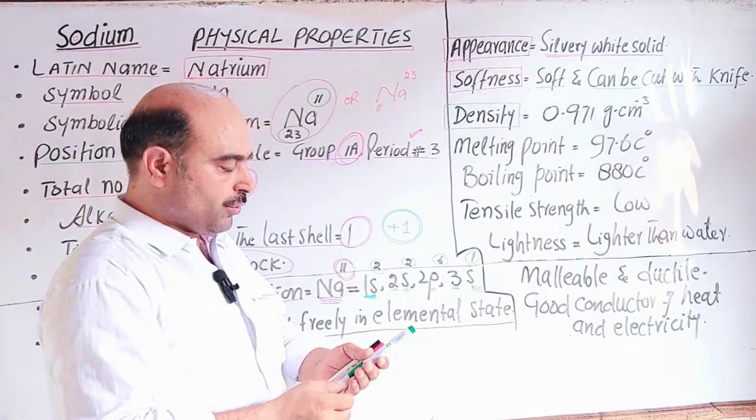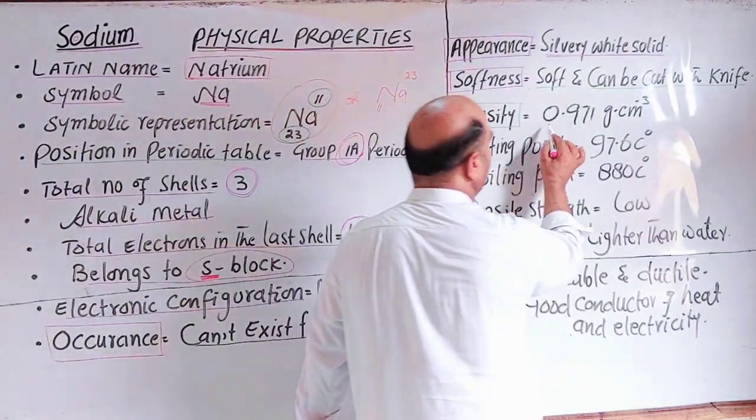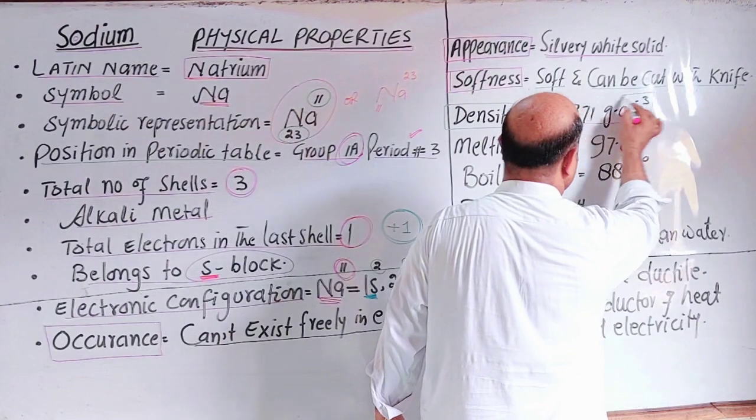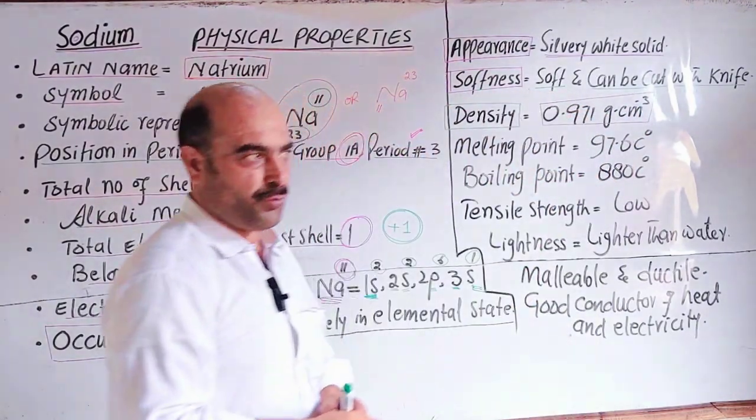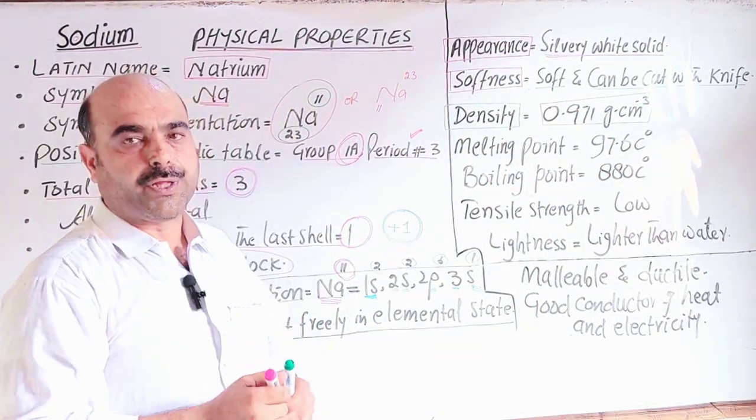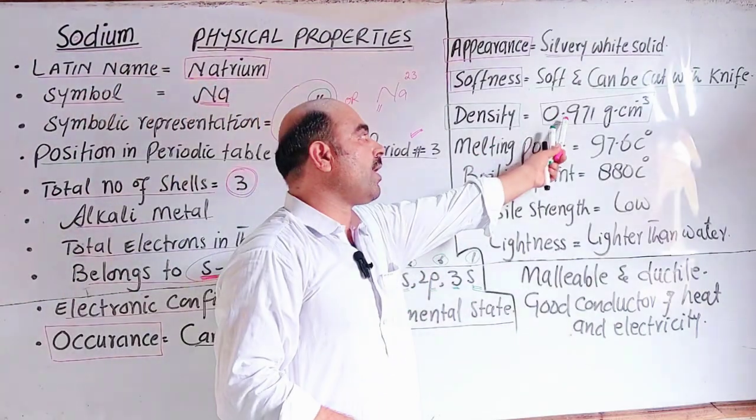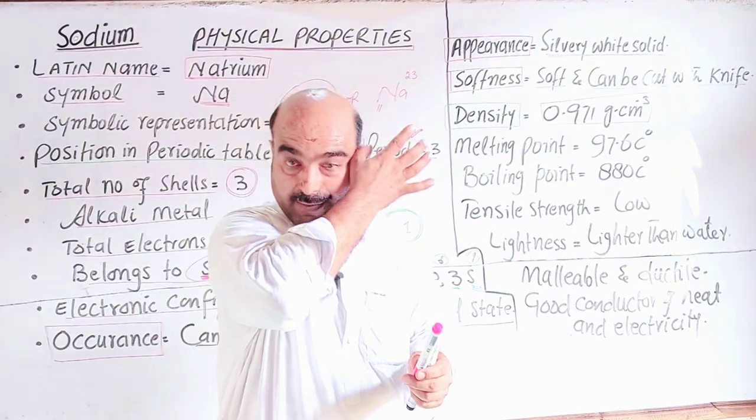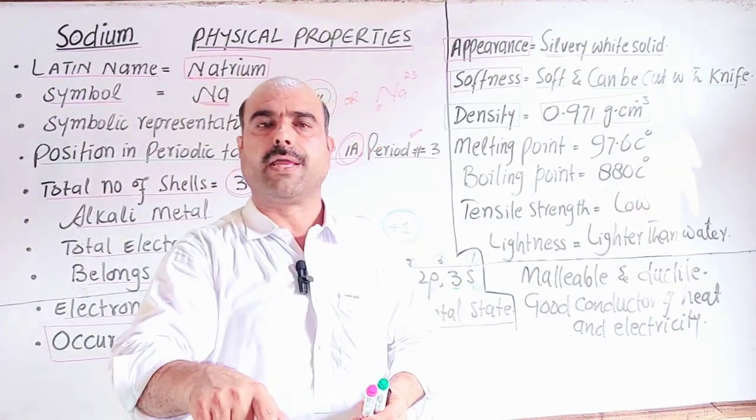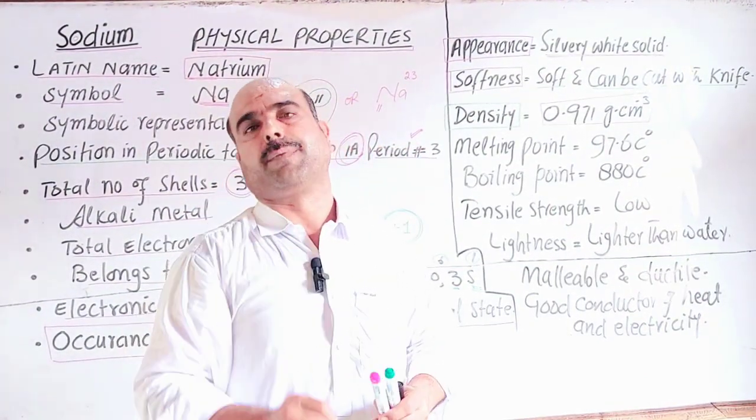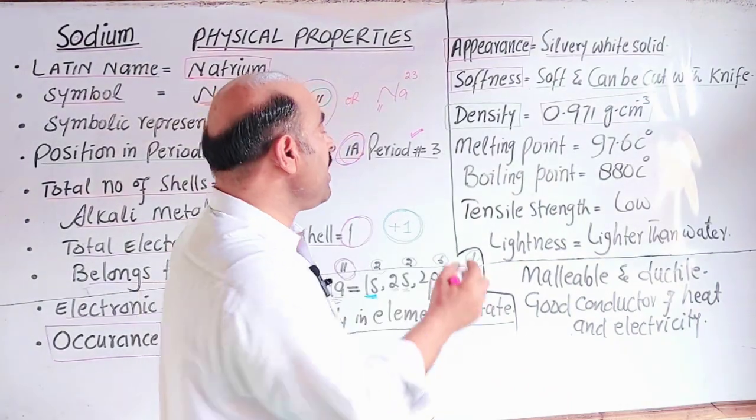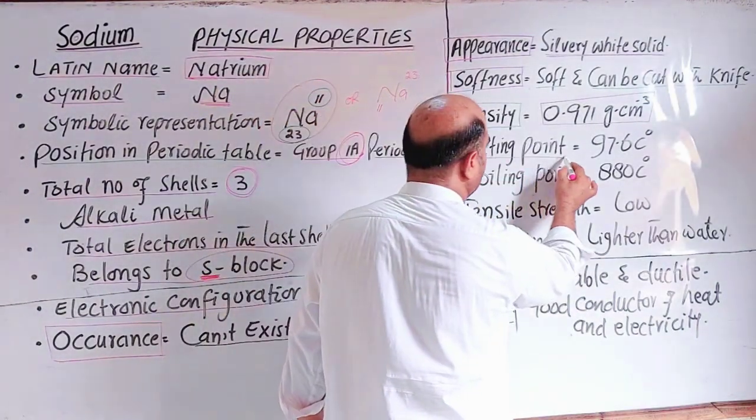Density: Its density is 0.971 grams per centimeter cube, while water density at four degrees is one gram per centimeter cube. The density is less than water, so when you put it in water, it floats on the surface of water.